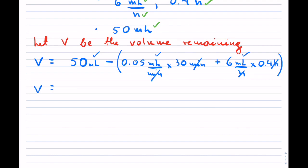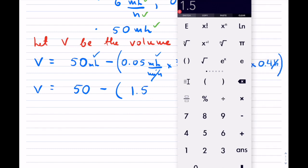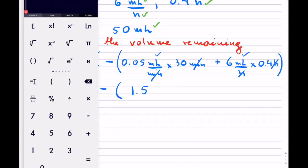So, let's calculate this, so 50 minus, now inside our bracket here, we can have 0.05 times 30, which is only 1.5 that they've used, and then they had 6 times 0.4, so that's actually 2.4.